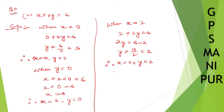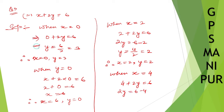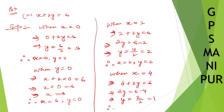When x is equal to 4, so 4 plus 2y is equal to 6. The 4 goes to the other side, so 2y is equal to 6 minus 4, y is equal to 2 divided by 2. Therefore x is equal to 4, y is equal to 1.